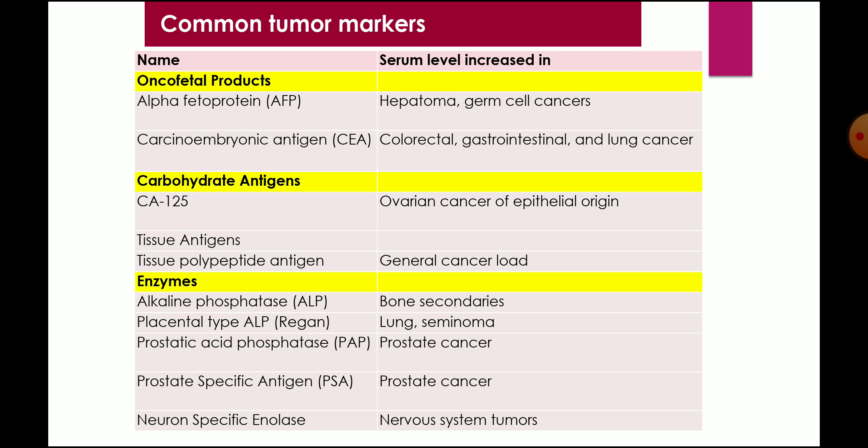You have to give examples of various common tumor markers. Depending on the question, you write 1, 2, or 4 examples. The types are: oncofetal products, carbohydrate antigens, and enzymes. The oncofetal products are alpha-fetoprotein — increased in hepatoma or germ cell cancer — and carcinoembryonic antigen (CEA) — increased in colorectal, gastrointestinal, or lung cancer. Carbohydrate antigen CA-125 is present in ovarian cancer of epithelial origin. Tissue polypeptide antigens are there for general cancer load — they are not specific.